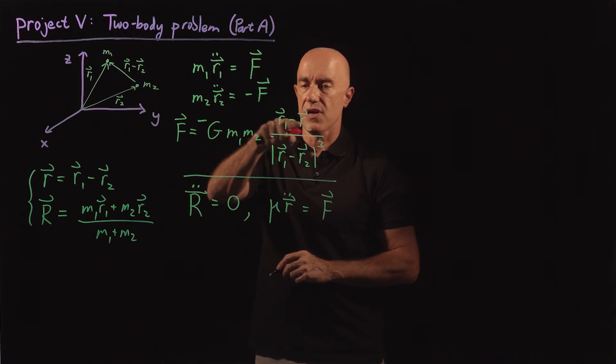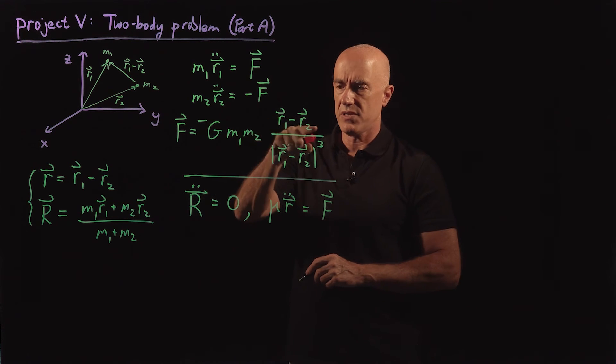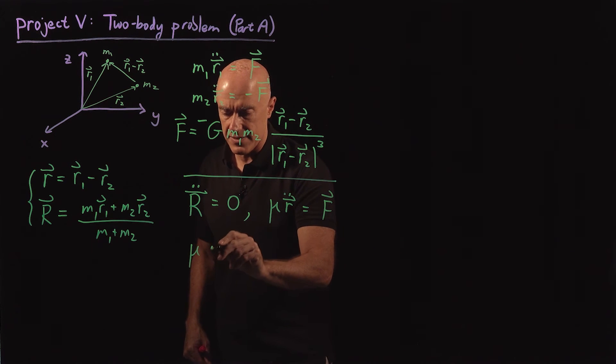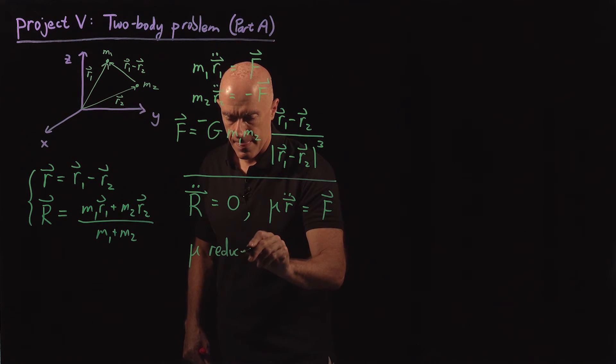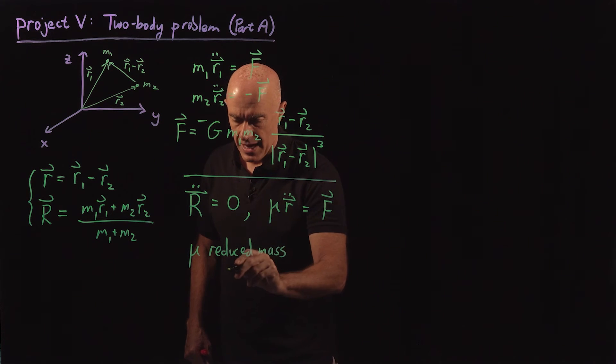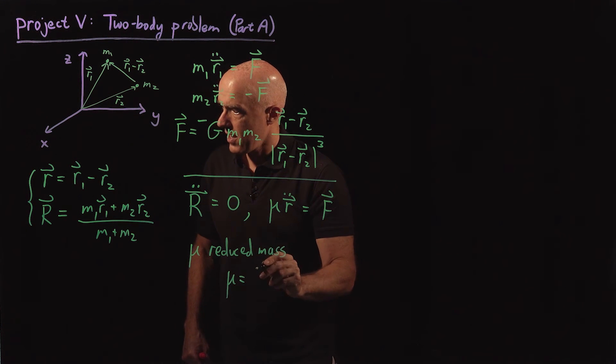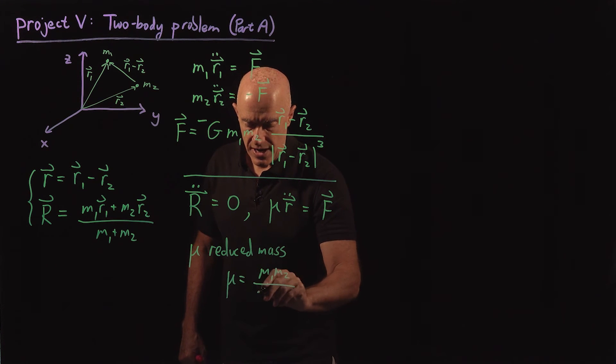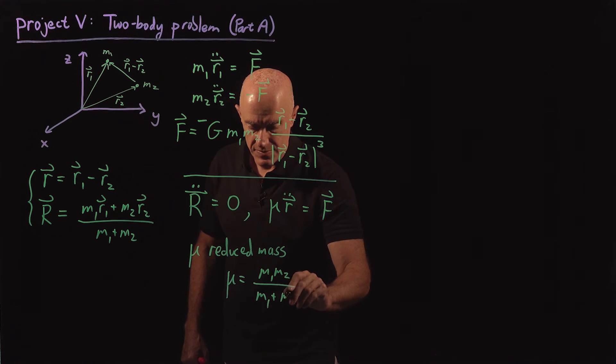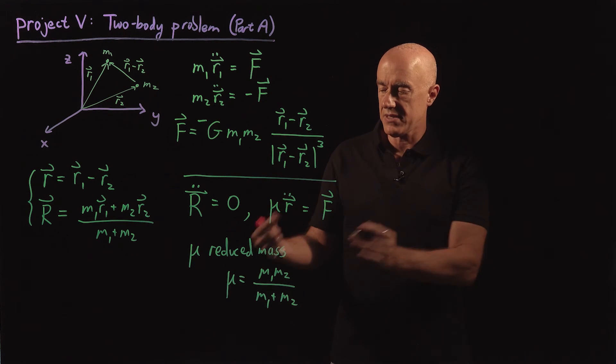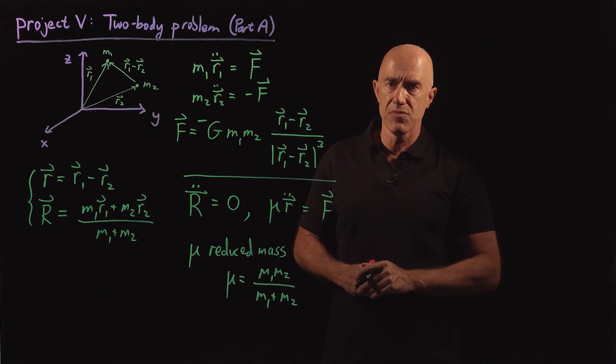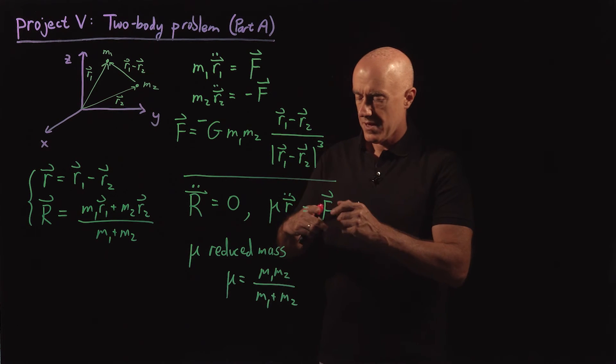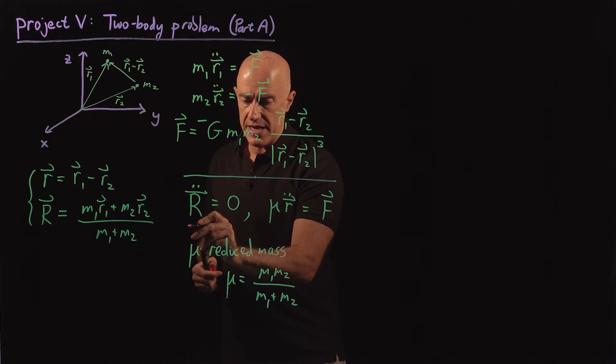f is already in terms of r, because r is just r1 minus r2. This mu is called the reduced mass, and is equal to m1 times m2 over m1 plus m2, which is always less than m1 and m2. So that's why it's called a reduced mass. So these are our equations.